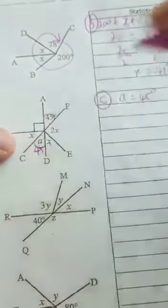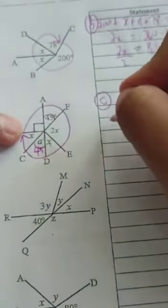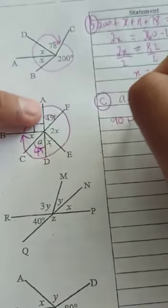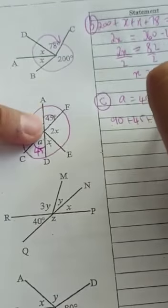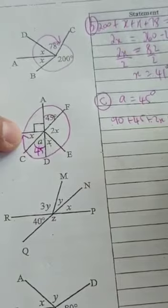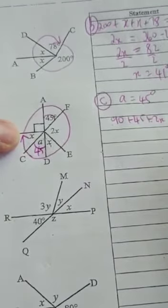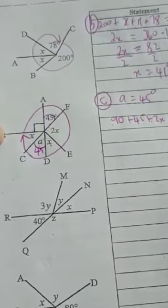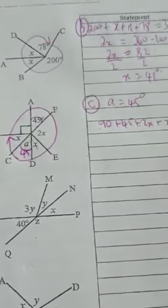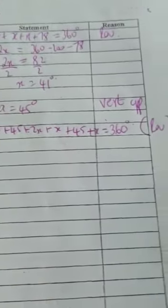So I fill in 45 there. Now I can go angles around the point. So now we say 90 plus 45 plus 2x plus x plus 45 plus x equals 360 degrees. Why? It's a revolution.